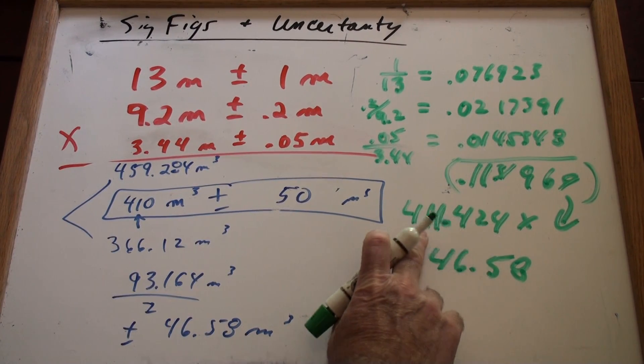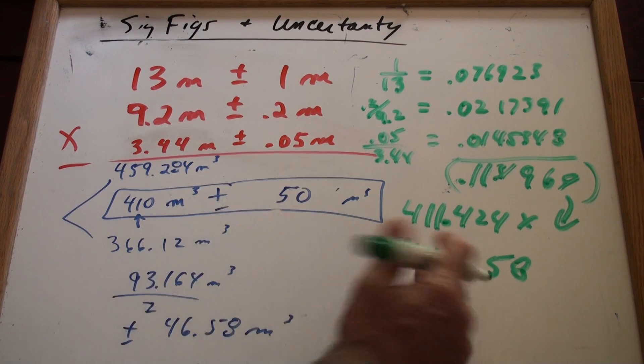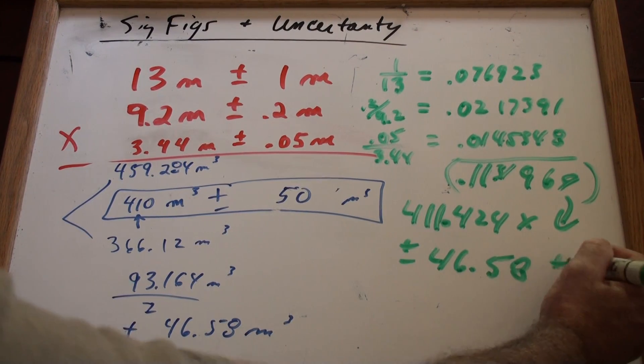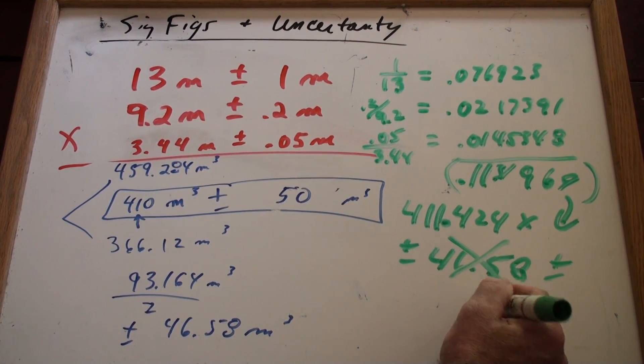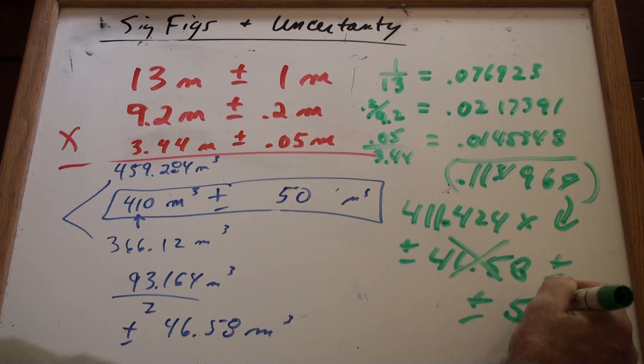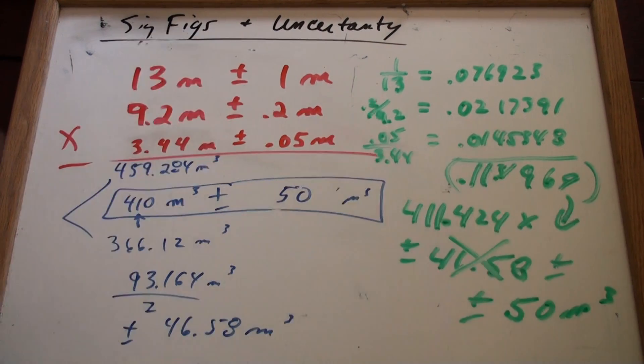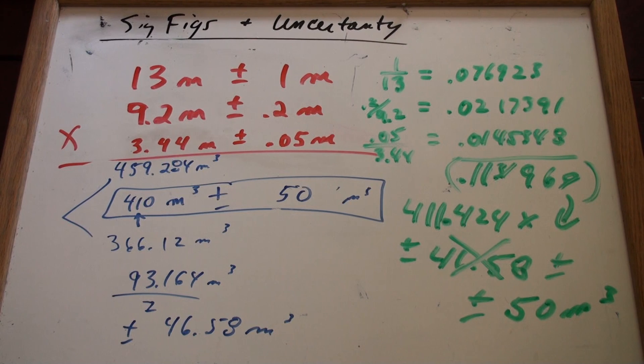But do I leave it like that? Oh, no. Just like I rounded this to 410, I have to round this to plus or minus 50. So, folks, that's how to do percent uncertainty or high-low.